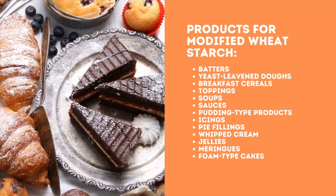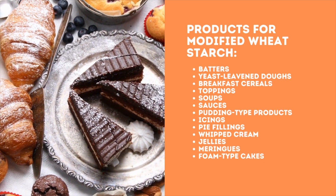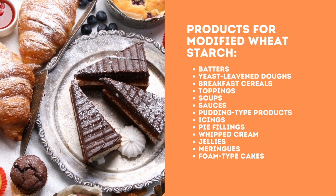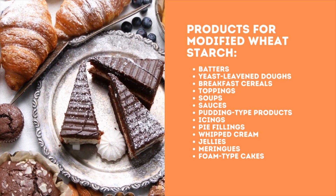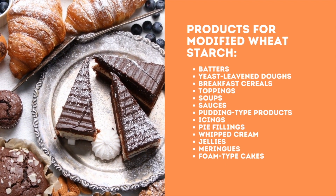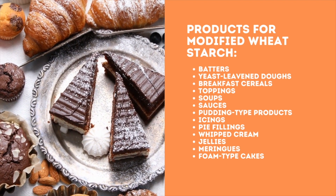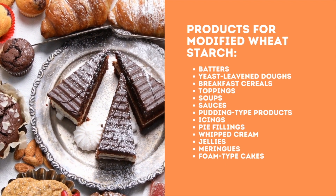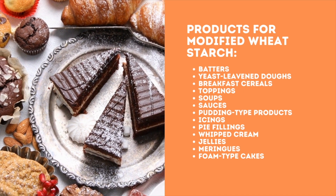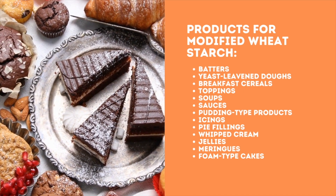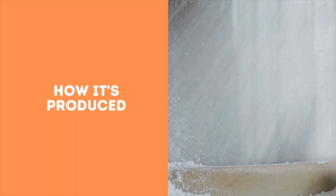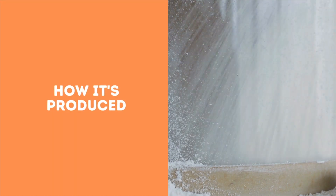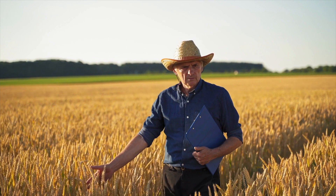Modified wheat starch can be used in an infinite range of products such as batters, yeast-leavened doughs, breakfast cereals, toppings, soups, sauces, pudding, gluten-type products, icings, pie fillings, whipped cream, jellies, meringues, and foam-type cakes.